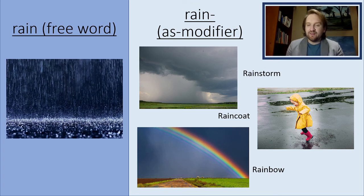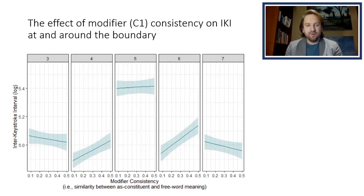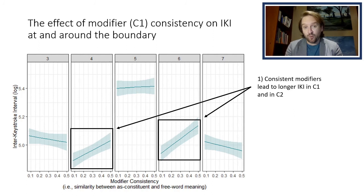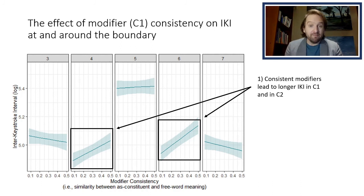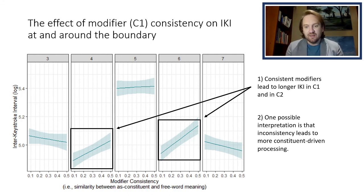Looking at the free word rain, it is very closely related to the compounds in which rain appears as a modifier — so we would say this has very high consistency. Contrasting this with the free word worm compared to the compounds in which worm appears as a modifier, they are quite different, and we would expect their distributions in large corpora to be very different. Here we see the effect of modifier consistency on inter-keystroke intervals around the boundary — specifically, an effect only at position four and position six. Interestingly, the more consistent the modifier is to its free word, the slower the inter-keystroke intervals at both positions. One possible interpretation is that inconsistency between the free word and the constituent within the entire family leads to more constituent-driven processing and less interference from the free word representation.